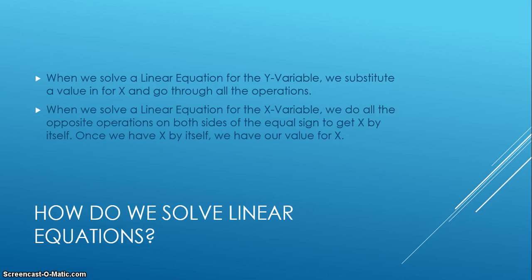So how do we solve linear equations? Well, if we're looking for a value for y, we just substitute a value for x and go through all the operations. But if we're looking for a value for x, we have to do all the opposite operations on both sides of the equal sign to get x by itself. Once we get x by itself, we have our value for x.